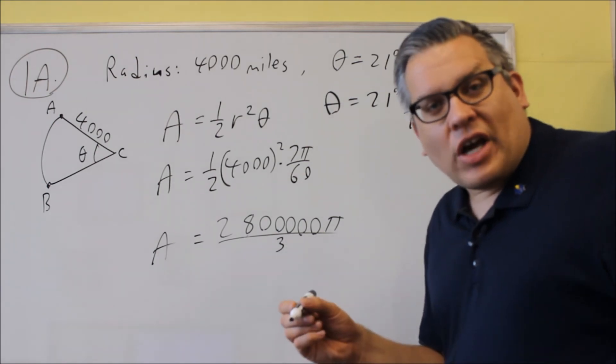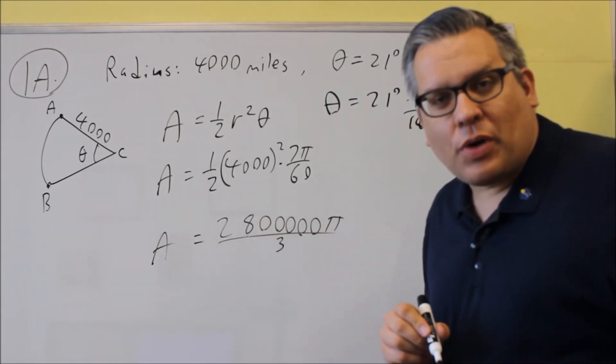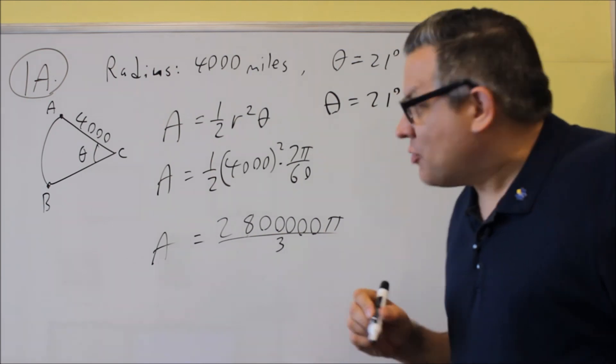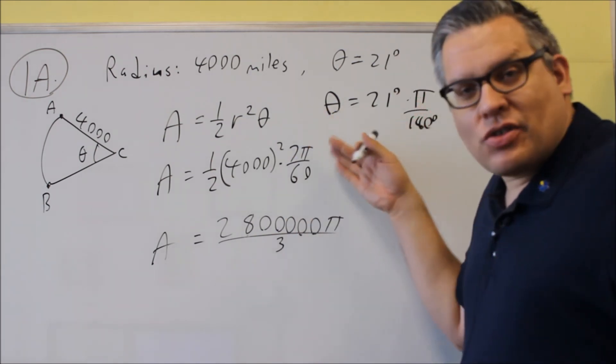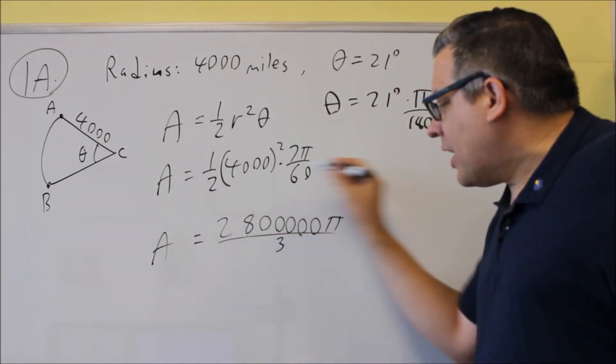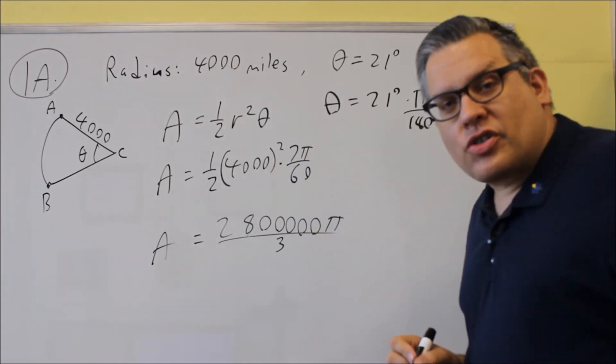But it's not necessary to do so unless it asks for it. So on a test, I would tell you, write your answer in terms of pi or round to the nearest decimal. So in this case, it's okay to leave your answer in terms of pi, and so this is what you would get when you multiply all this together.